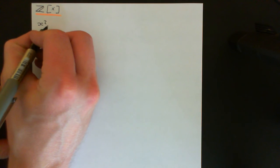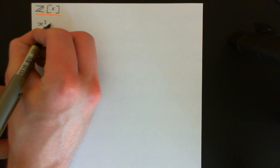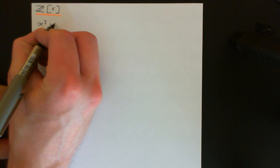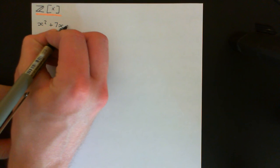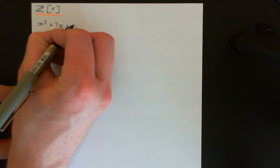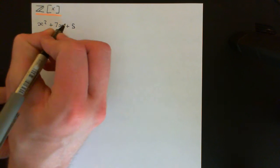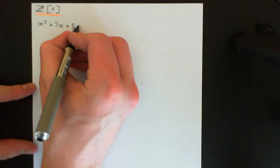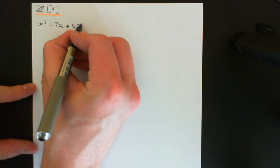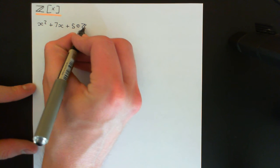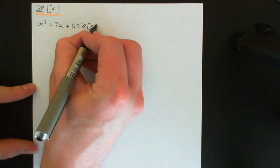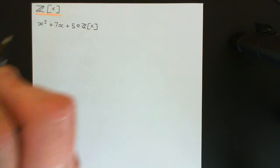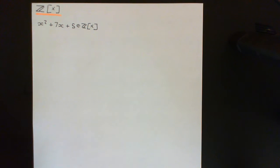Let's take some monic polynomial from the ring of polynomials with coefficients in the integers. Let's just go for a second degree polynomial: x squared plus 7x plus 5. That's certainly an element of ℤ[x], the ring of polynomials with coefficients in the integers.